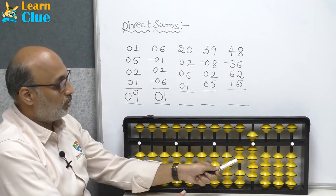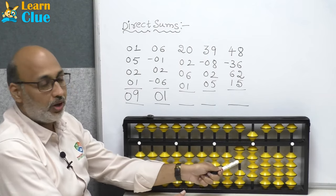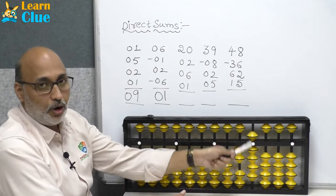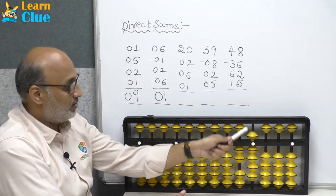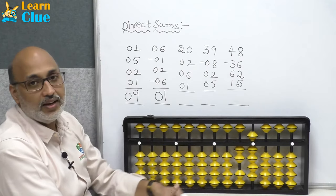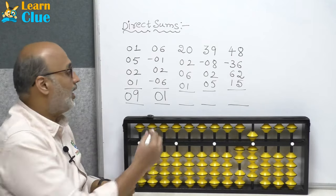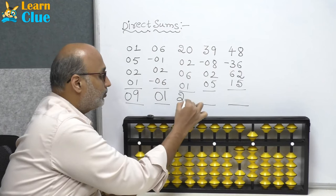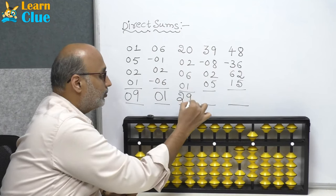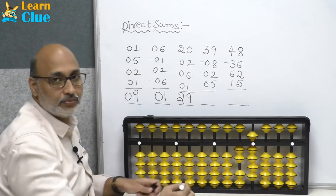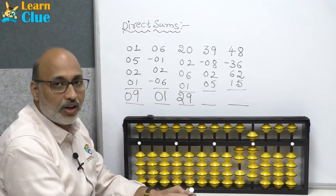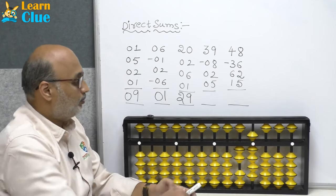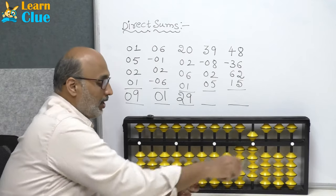Count the total answer. In tens place: 20. In ones place: 9 beads. The answer is 29.